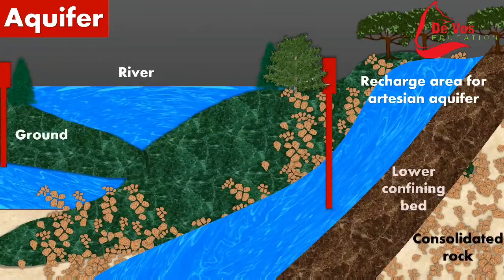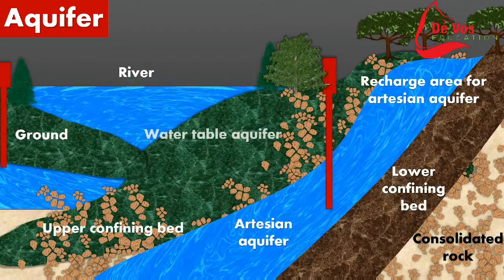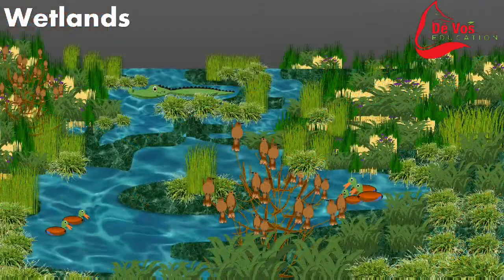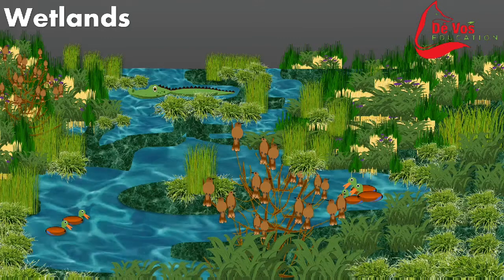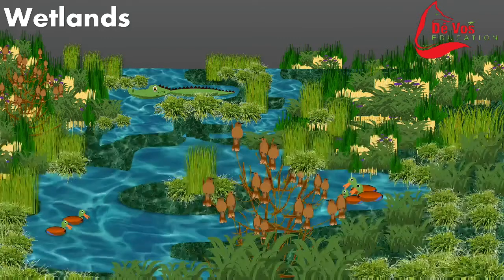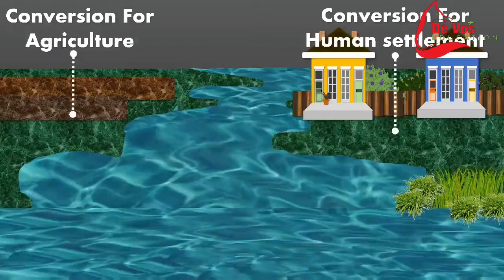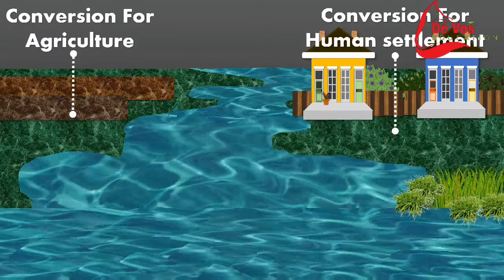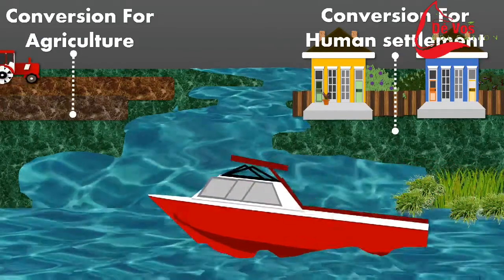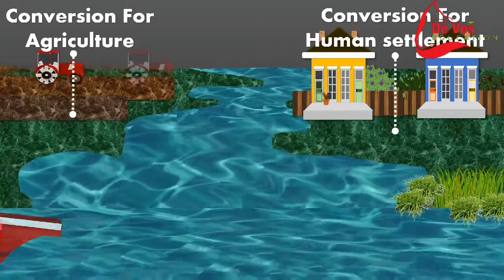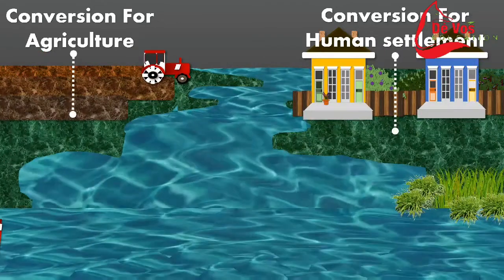Groundwater depletion can affect surface water systems by reducing groundwater contributions to stream flow, therefore impacting ecosystems that rely on groundwater during periods with limited rainfall.